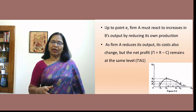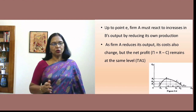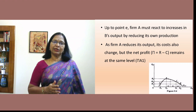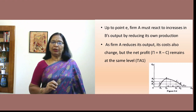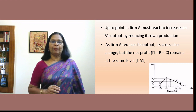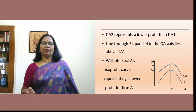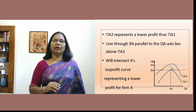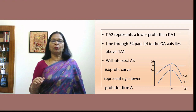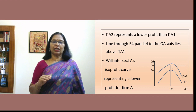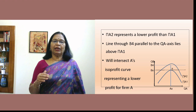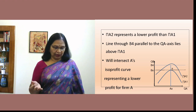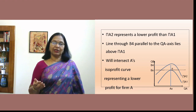Firm A must react to increases in firm B's output by reducing its own level of production. As firm A reduces its output, the cost of production changes, but the net profit — revenue minus cost — may remain the same, keeping the firm on the same isoprofit curve. When a new isoprofit curve A2 is introduced and intersected by a higher output level B4, the firm's profit falls to a lower level, even though the isoprofit curve is at a higher position.